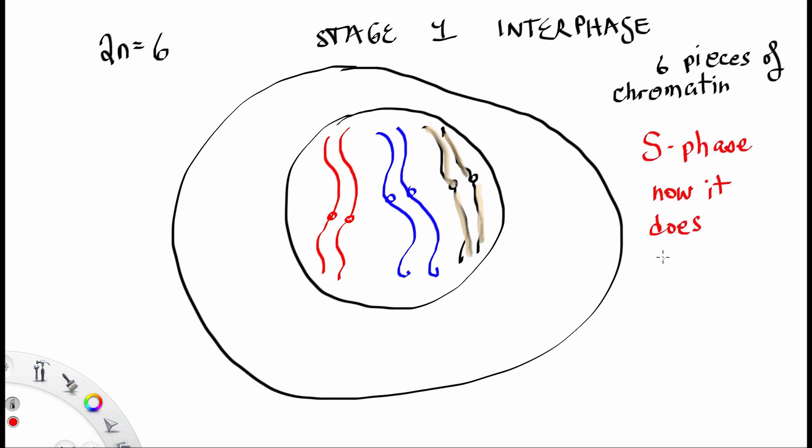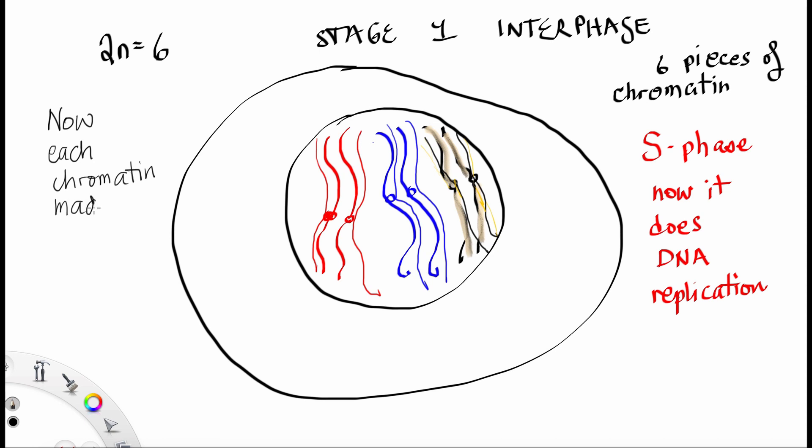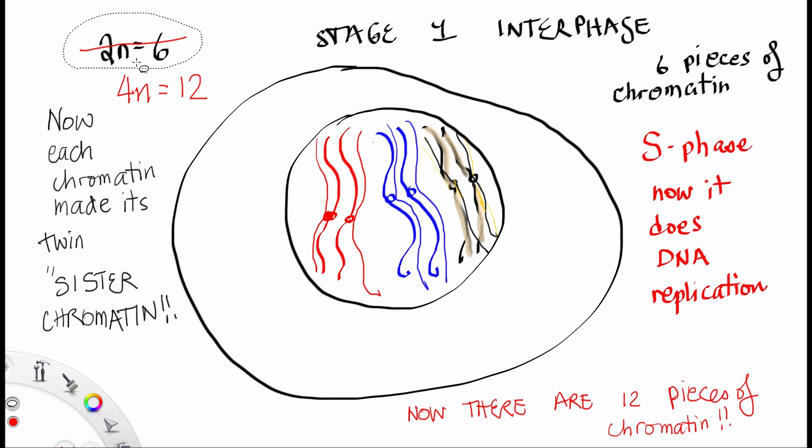Next is the S phase of interphase. Now it does DNA replication. Watch closely as the head chromatins replicate themselves. Now the torso and the feet chromatins are replicating themselves. Now each of the chromatin has made its twin sister. We've got sister chromatins. They're identical. Now there's 12 pieces of chromatin inside that cell. Not 6, but 12.